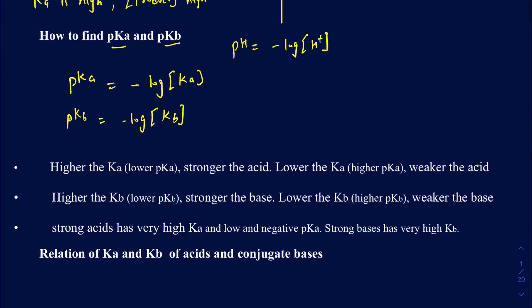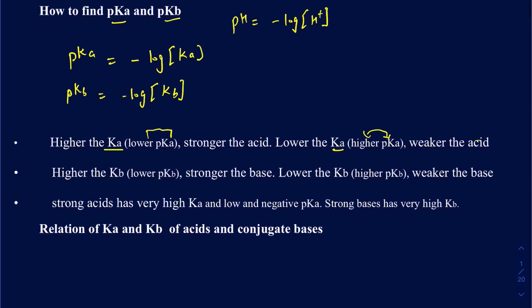A higher Ka value corresponds to a lower pKa value, indicating a stronger acid. A lower Ka value corresponds to a higher pKa value, indicating a weaker acid. This is very similar to pH and H⁺ concentration: when your H⁺ concentration is high, your pH drops. The same logic applies — if your Ka value is high, your pKa value is low.